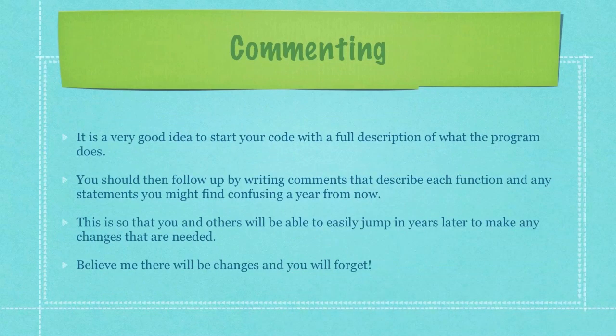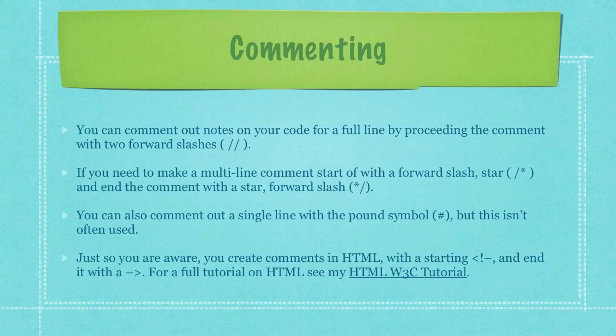It is a very good idea to start your code with a full description of what the program does. You should then follow up by writing comments that describe each function and any statements you might find confusing a year from now, so that you and others will be able to easily jump in years later to make any changes that are needed. Believe me, there will be changes and you will forget. You can comment out a full line by preceding the comment with two forward slashes. For a multi-line comment, start with a forward slash and then a star, and end the comment with a star forward slash. You can also comment out a single line with the pound symbol but this isn't often used. In HTML, you create comments with a less than sign followed by an exclamation point, two dashes, and end it with two dashes and a greater than sign. For a full tutorial on HTML, see my other HTML tutorial.